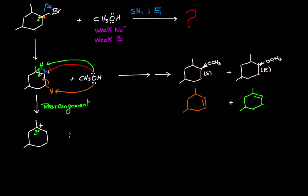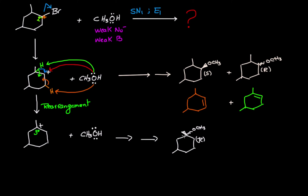In the presence of methanol, the rearranged carbocation also gives two substitution products. The first has the methyl group facing forward and OCH3 facing backward — that configuration is R. The second stereoisomer has OCH3 facing forward and the methyl facing back, giving the S configuration.